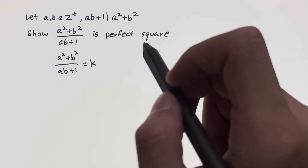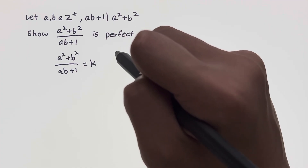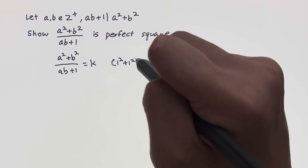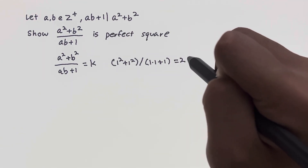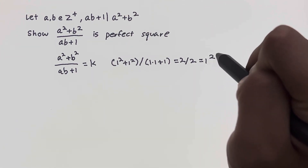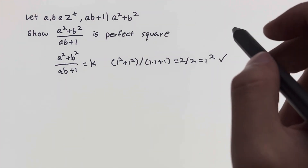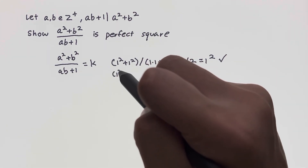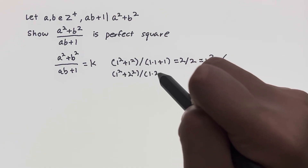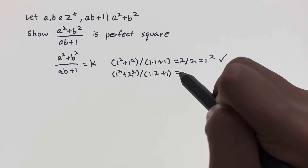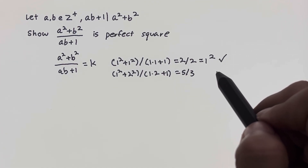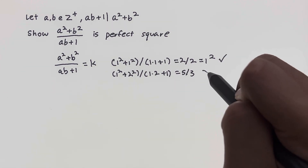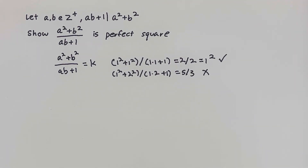So when a equals 1 and b equals 1, we have 1 squared plus 1 squared divided by 1 times 1 plus 1 equals 2 over 2 equals 1, or 1 squared. This works. Now, what about a equals 1 and b equals 2? Then we have 1 squared plus 2 squared divided by 1 times 2 plus 1 equals 5 over 3. That's not even an integer, so the condition that ab plus 1 divides a squared plus b squared is important — it does not work for all pairs of integers. So you see the problem here: we can't just guess the numbers. We need a different approach.